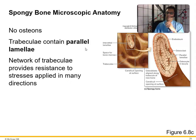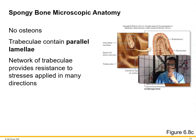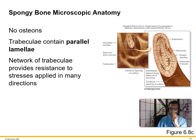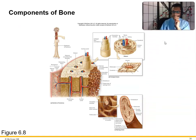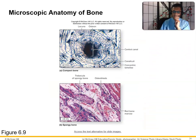The network of trabeculae in spongy bone gives flexibility. Osteoblasts are on the outside of trabeculae. Osteons are found only in compact bone. In the lab, you would look at the histology of bone to see these microscopic components.